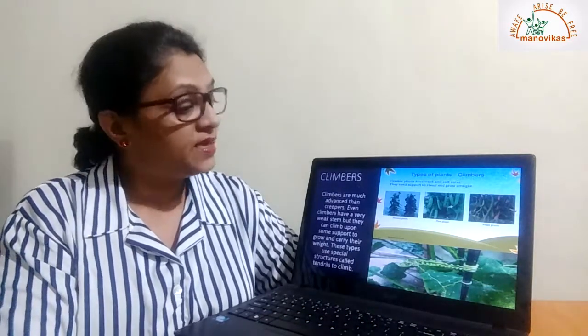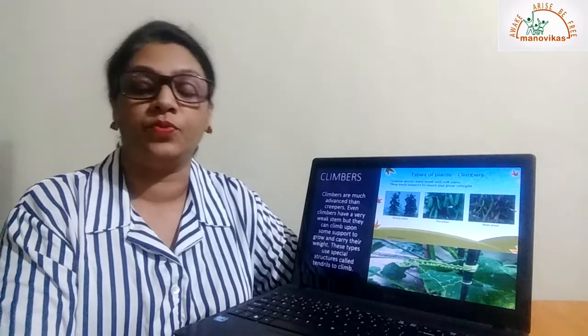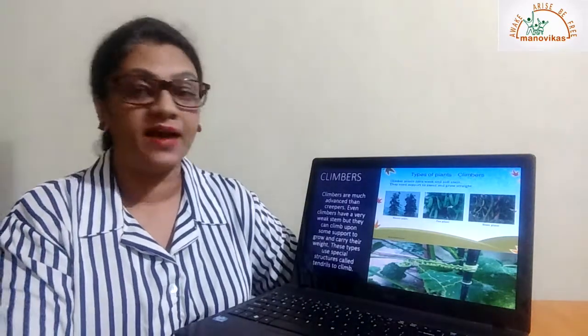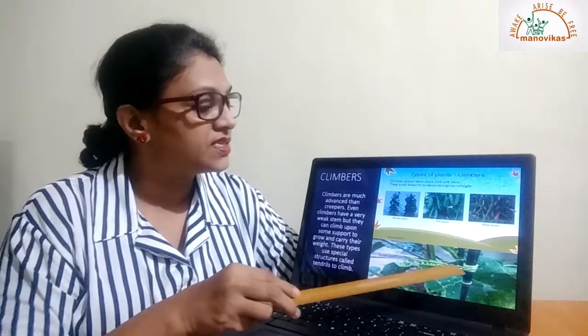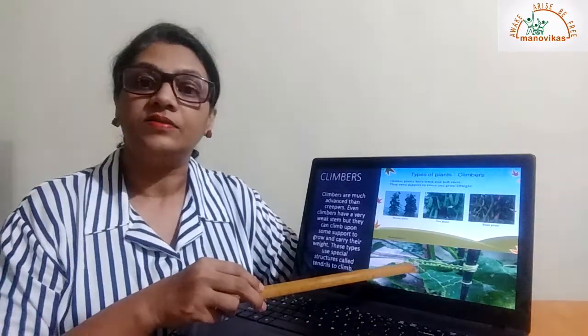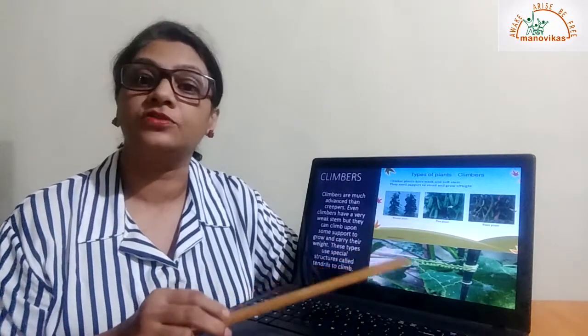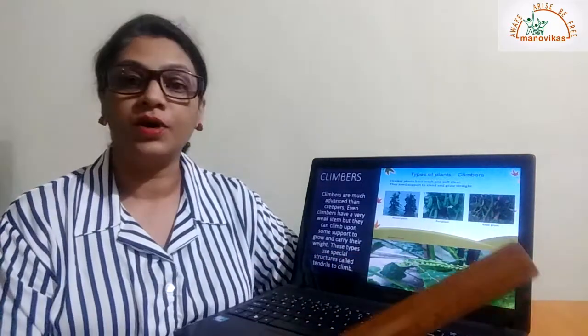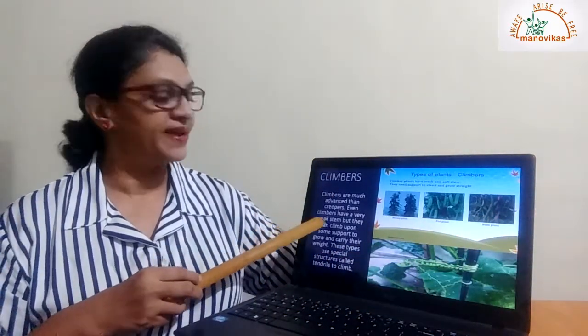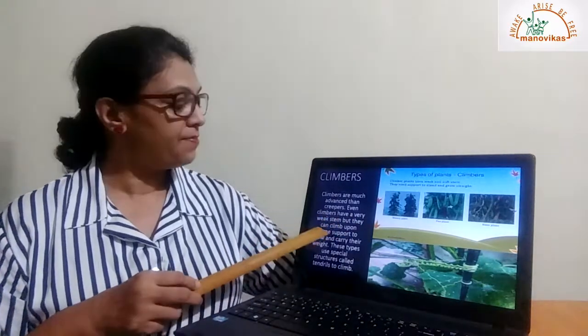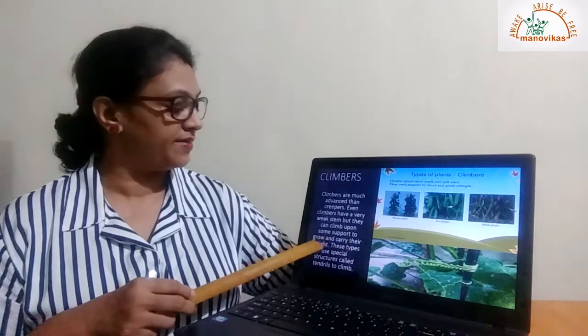Next we come to climbers. Climbers are also plants with a weak stem, but these plants are able to climb with the help of some support. They have structures called tendrils. These tendrils help the plant to climb. You must have seen the money plant growing on a moss stick — money plant is a climber. The pea plant and the bean plant are also climbers. These plants have a weak stem but can climb upon some support to grow and carry their weight.